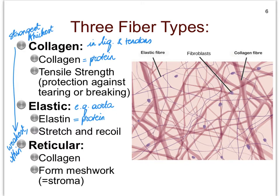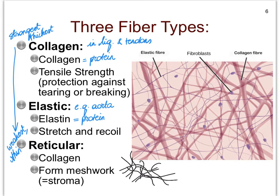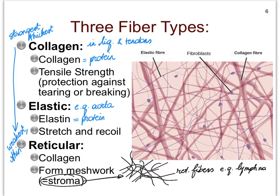Finally, we get to the very delicate fibers, and they are called reticular fibers. Interestingly, they are also made up of collagen, but it's a much more delicate form of collagen. What these fibers do is create a network or meshwork — and we call this meshwork of reticular fibers a stroma. We find these reticular fibers especially in organs and tissues that belong to the lymphatic system, such as your lymph nodes, your spleen, and your red bone marrow.